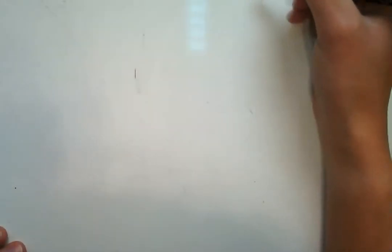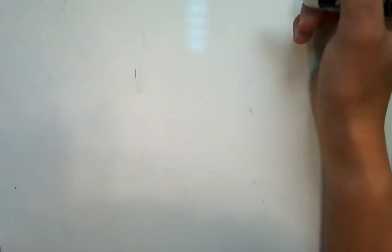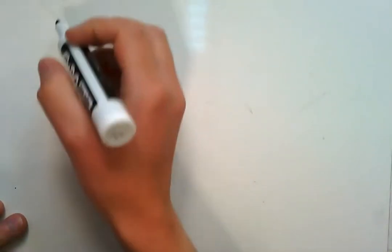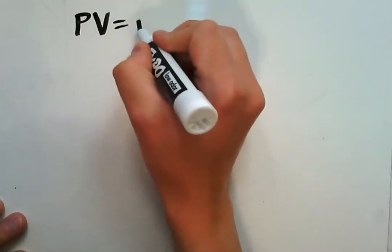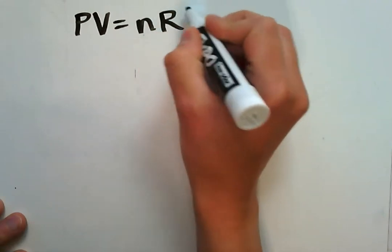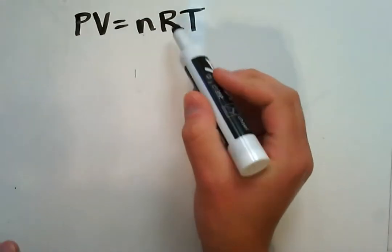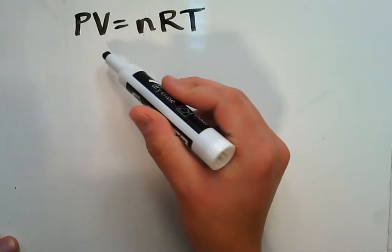Okay, so this video is on how to remember which gas law is which. On your formula sheet you have the ideal gas law which is PV equals nRT. If we move all the variables to one side of this equation by dividing by nRT on both sides.